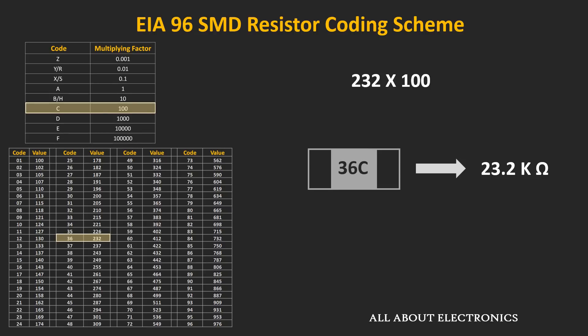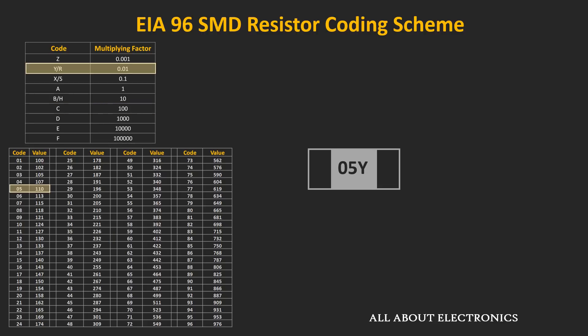Let's take a few more examples. If the code is 05y, the first two digits '05' represent a value of 110, and the last letter 'y' gives a multiplying factor of 0.01. So the resistor value is 110 × 0.01, which equals 1.1 Ω.